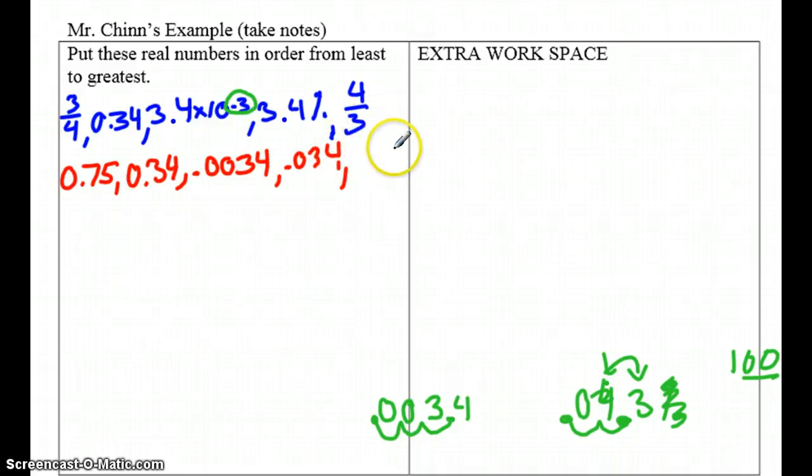And the final fraction, 4 thirds. So now we're going to divide 4 divided by 3. When you punch that in your calculator, you're going to get 1.3 repeating. So this is the most important step, making everything into a decimal.